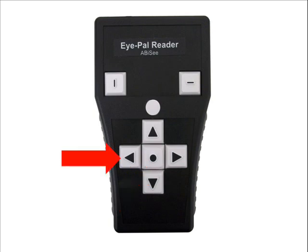To the left of the Pause Resume button is the Left Arrow button. It is marked with an arrow pointing left. This button is used to read the previous word.